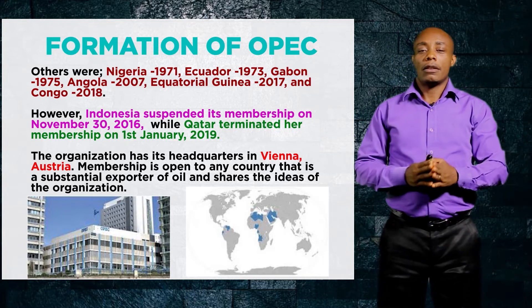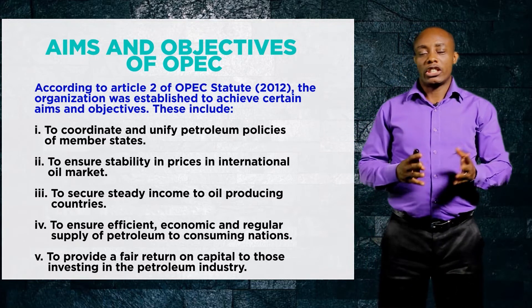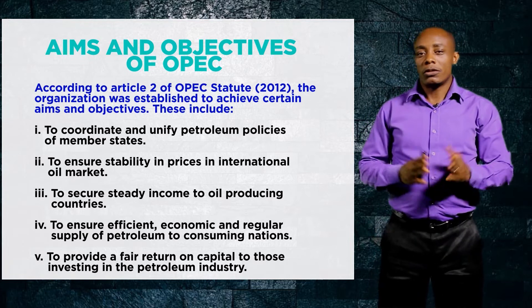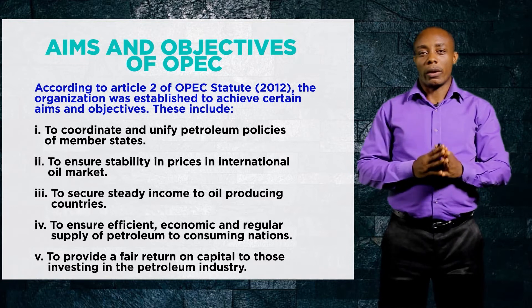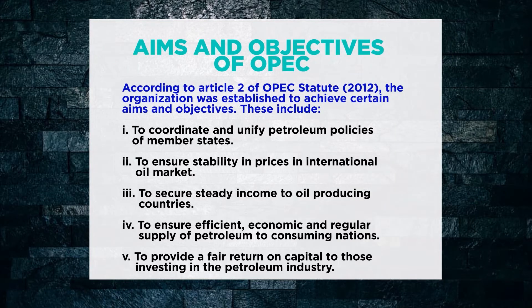According to Article 2 of the Statute of OPEC, released in 2012, OPEC was established to achieve certain objectives: to coordinate and unify petroleum policies of member states, to ensure stability of prices in the international oil market, to secure steady income for oil-producing countries, to ensure efficient economic and regular supply of petroleum to consuming nations, and to provide a fair return on capital to those investing in the petroleum industry.